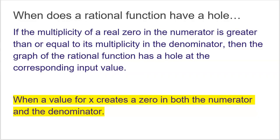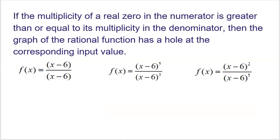When does a rational function have a hole? If the multiplicity of a real zero in the numerator is greater than or equal to its multiplicity in the denominator, then the graph of the rational function has a hole at the corresponding input value. In a nutshell, when a value x creates a zero in both the numerator and the denominator, that is when you have a hole.